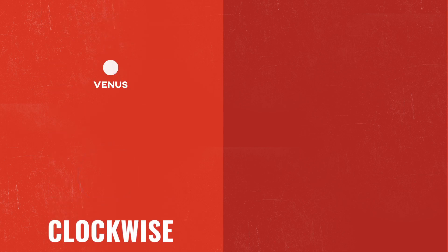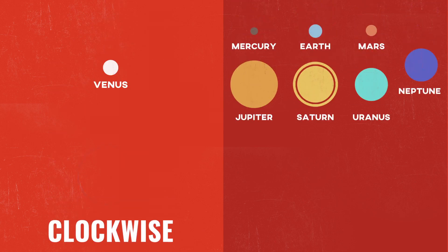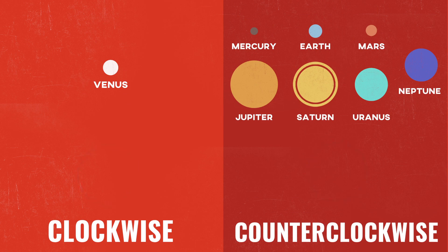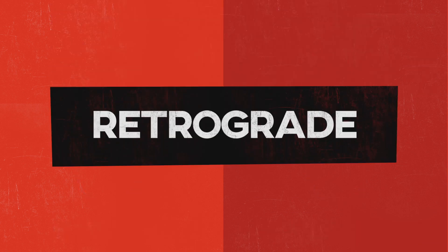Venus is one of the only planets that rotates clockwise, while all of the other planets rotate counterclockwise. This is known as retrograde rotation.